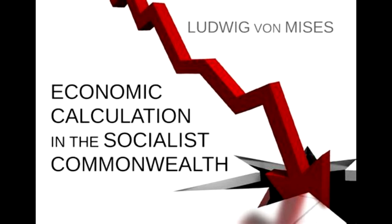Without economic calculation, there can be no economy. Hence, in a socialist state wherein the pursuit of economic calculation is impossible, there can be, in our sense of the term, no economy whatsoever. In trivial and secondary matters, rational conduct might still be possible. But in general, it would be impossible to speak of rational production anymore. There would be no means of determining what was rational, and hence it is obvious that production could never be directed by economic considerations. What this means is clear enough. Apart from its effects on the supply of commodities, rational conduct would be divorced from the very ground which is its proper domain. Would there, in fact, be any such thing as rational conduct at all, or indeed such a thing as rationality and logic and thought itself?